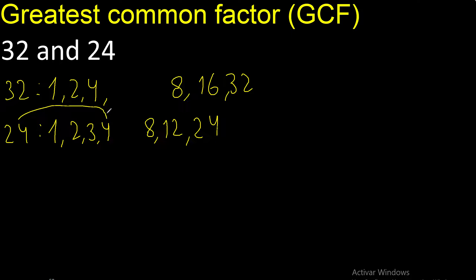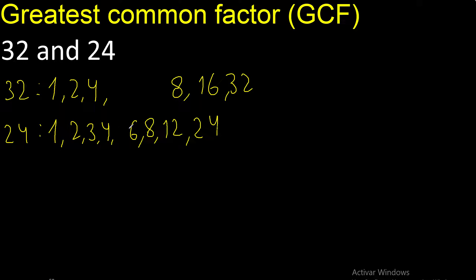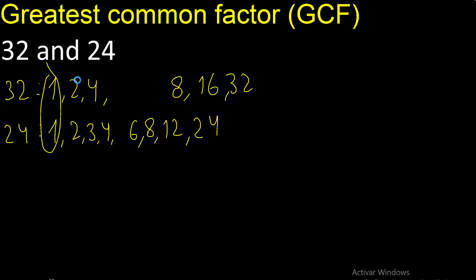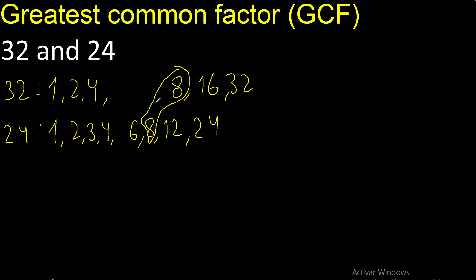Divided by 4 is 6. Next, 5 cannot be divided by 5. Next, 6 — 6 is here. Factors equal — 8 is the largest common factor, therefore the GCF is 8.